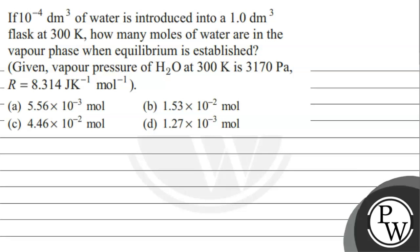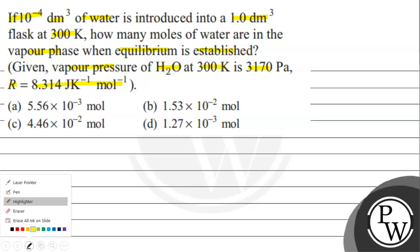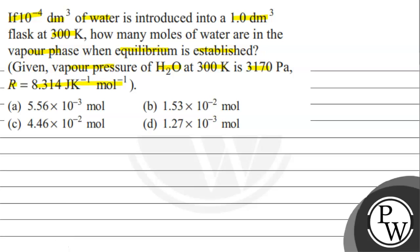The question says: if 10 to the power minus 4 decimeter cube of water is introduced into a one decimeter cube flask at 300 Kelvin, how many moles of water are in the vapor phase when equilibrium is established? Given: vapor pressure of water at 300 Kelvin is 3170 Pascal, and the universal gas constant is 8.314 joule per Kelvin per mole. Options: A) 5.56×10⁻³ mol, B) 1.53×10⁻² mol, C) 4.46×10⁻² mol, D) 1.27×10⁻³ mol.